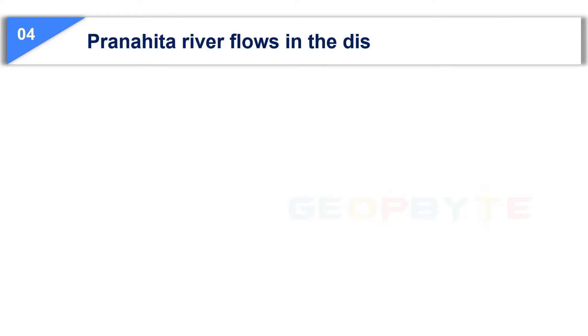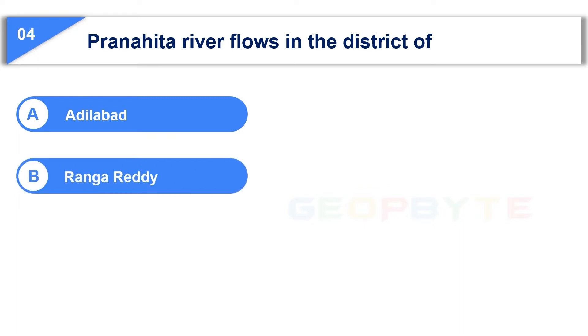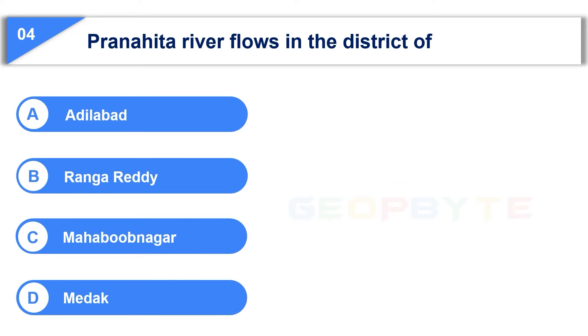Moving to the fourth question: Pranahita River flows in the district of — Option A: Adilabad, Option B: Rangareddy, Option C: Mahbubnagar, Option D: Mahbubnagar.